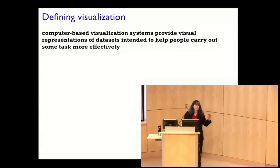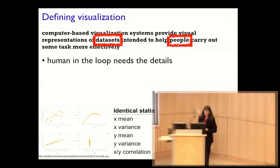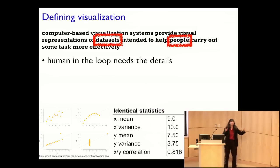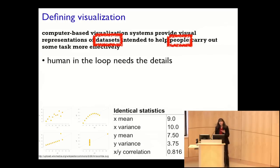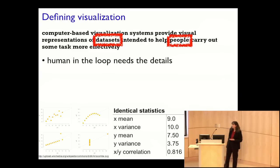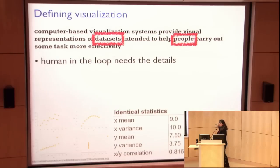What are some implications of that statement? There is data, there are people, and there is some connection between them — a human in the loop who needs details about a data set. We need a human in the loop when we don't know enough to completely automate a system, or we have a hypothetical automation to validate before deploying it. People need to see details when summary statistics alone don't tell the full picture.